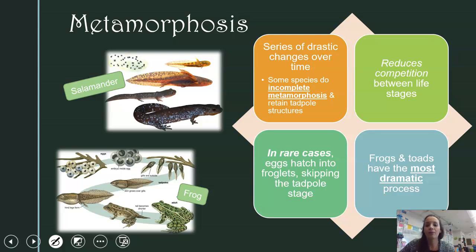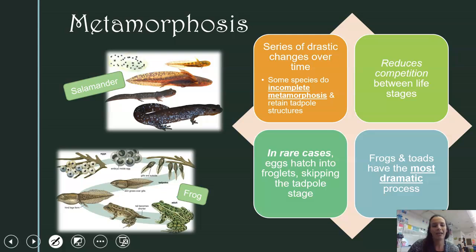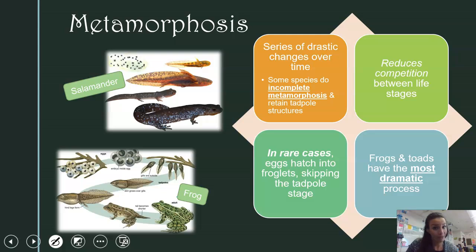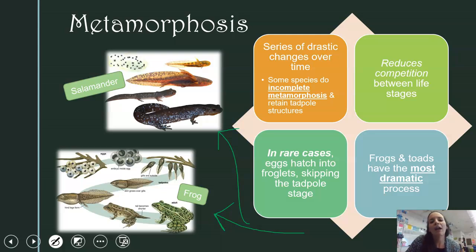Metamorphosis, previously discussed in insects, is something amphibians are also widely known for — those drastic changes over time. Some do incomplete metamorphosis and retain some structures, usually gills. For most, they fully change from egg to tadpole to adult. This helps reduce competition between stages, since larvae eat plant matter and adults are carnivores. Frogs have the most dramatic process, going from a tadpole with a tail to a frog without a tail at all, versus salamanders which look relatively the same throughout.